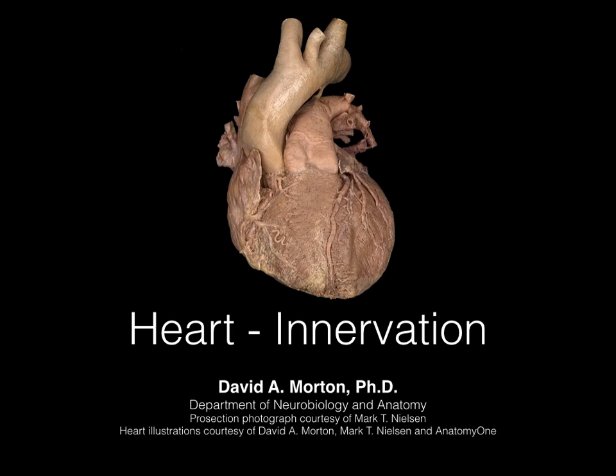This next tutorial will cover the heart and specifically the innervation of the heart. The heart is innervated by both sympathetic and parasympathetic nervous systems. Let's start with the sympathetic nervous system first.